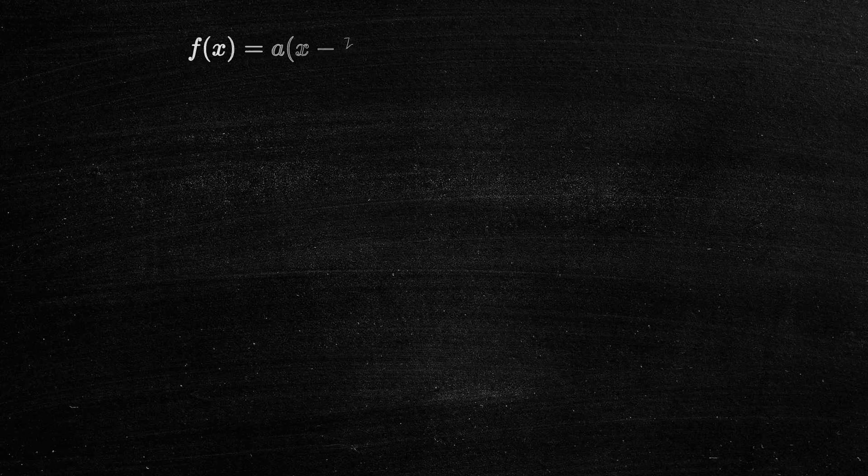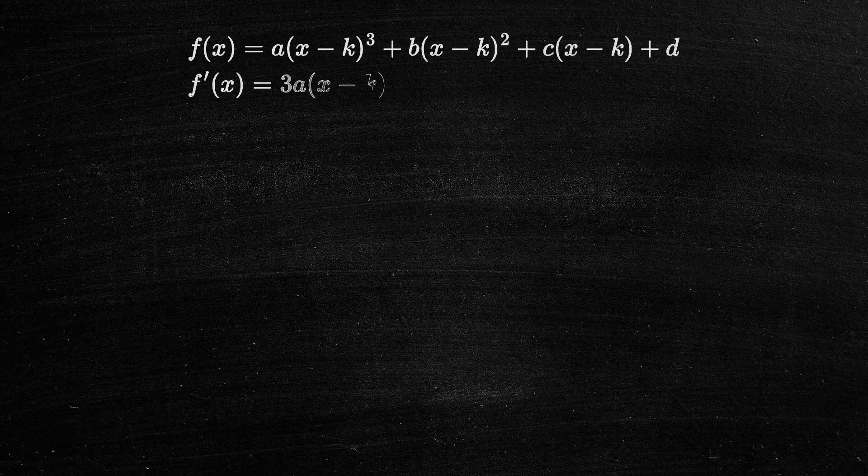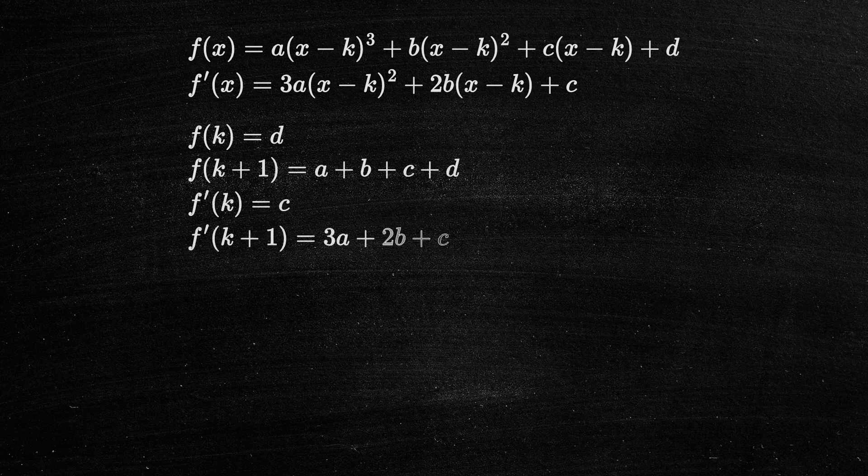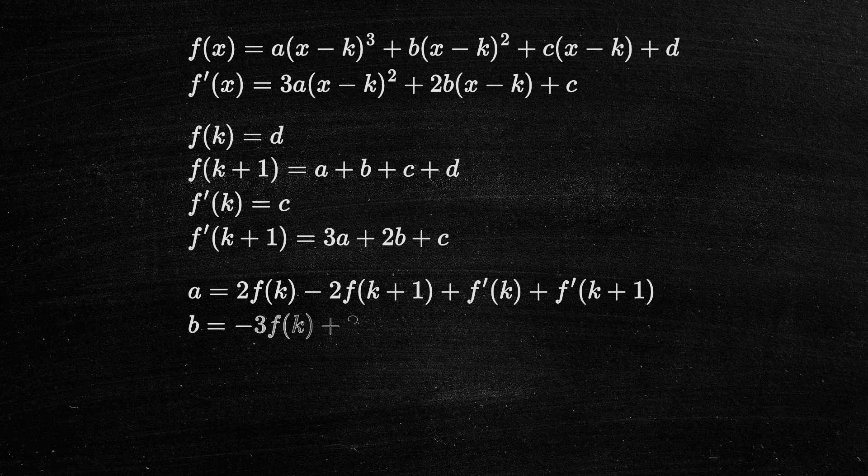The mathematical basis of cubic interpolation lies on the fact that if the values of a function f(x) and its derivative are known at x equals k and x equals k plus 1, then the function can be interpolated on the interval from k to k plus 1 using a third-degree polynomial.